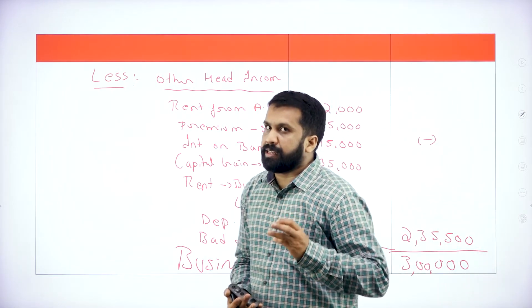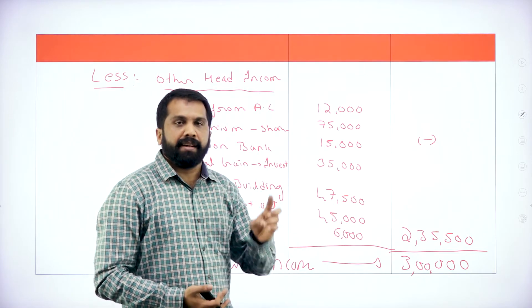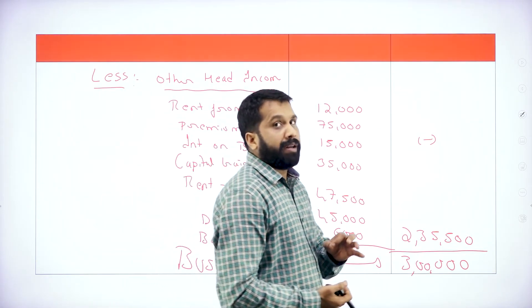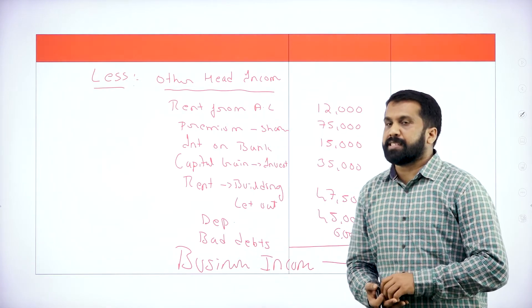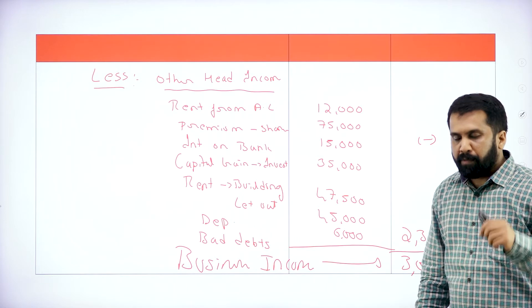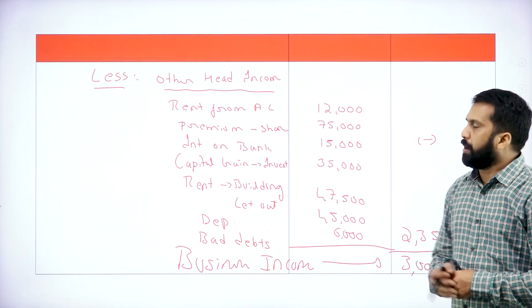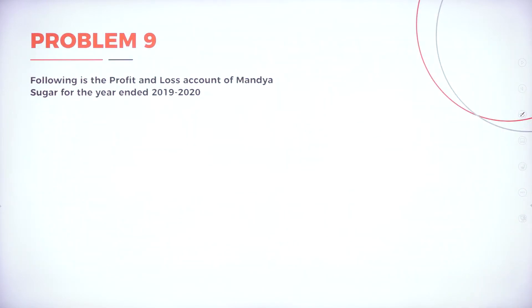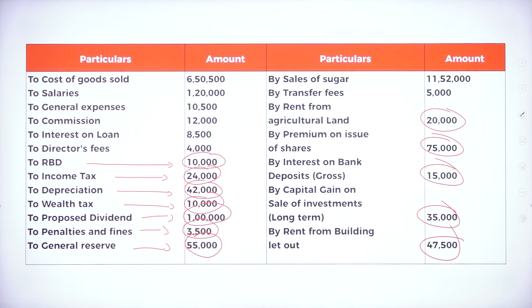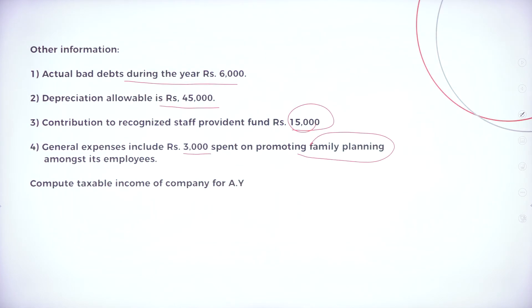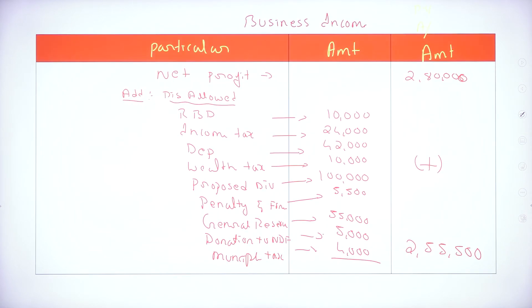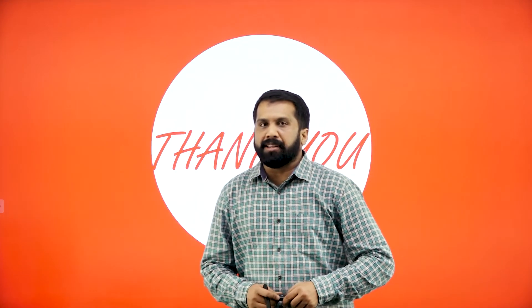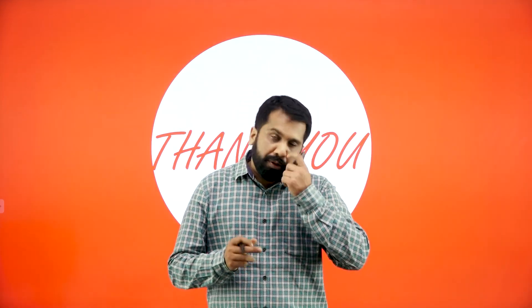Income from salary — always nil. Income from house property — given in this problem. Income from capital gain — there. Income from other sources — there. Income from business or profession — 3,00,000. Do the total income in the exam also. You can take a screenshot of this. This is problem number 9 — your solution part. This is all about today's session on assessment of companies. We will go with a new topic from the next session. Thank you.